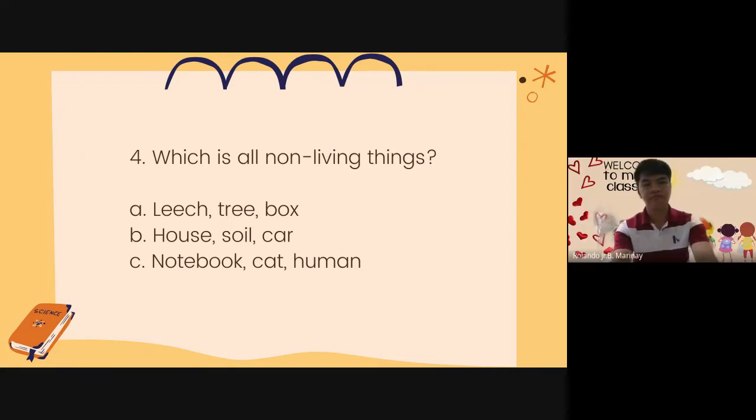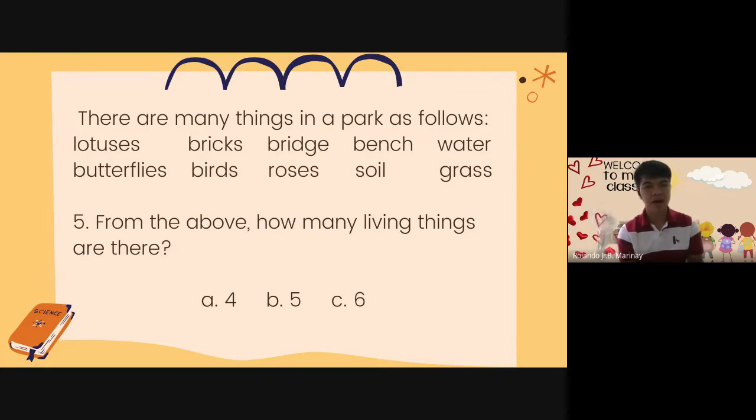Number five. There are many things in a park as follows. You have lotuses, butterflies, bricks, birds, bridge, roses, bench, soil, water, and grass. From the above, how many living things are there? A. Four. B. Five. Or C. Six. For those who just entered the room, it's page 182.